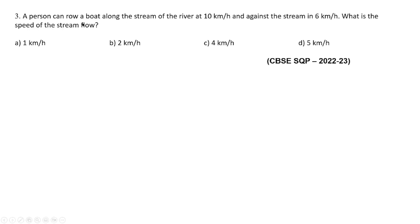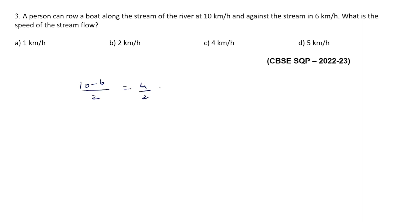Next question: A person can row a boat along the stream at 10 km/h and against the stream at 6 km/h. What is the speed of the stream? This is straightforward. Downstream speed is 10 km/h and upstream speed is 6 km/h. Speed of stream equals downstream minus upstream divided by 2, which is 10 minus 6 by 2, equals 4 by 2, which is 2 km/h. So the correct option is option B.